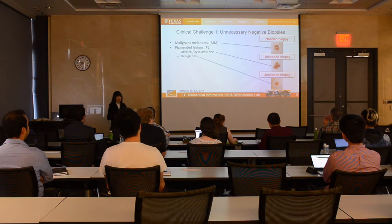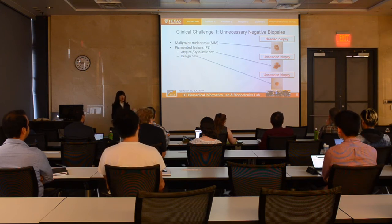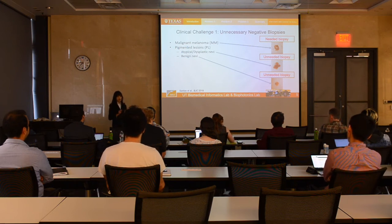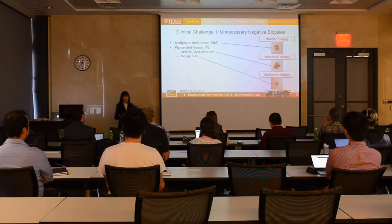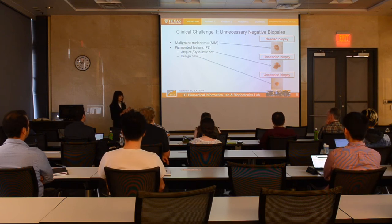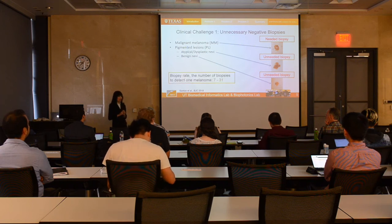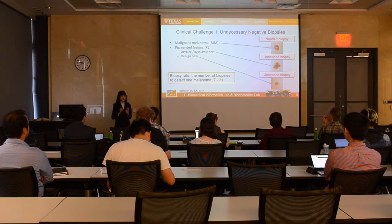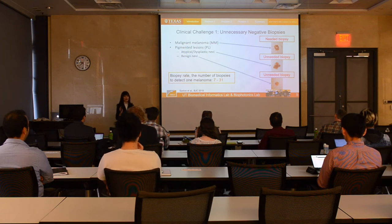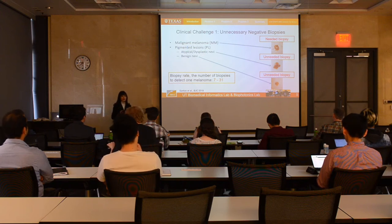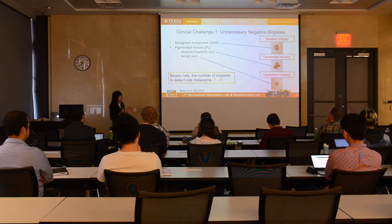This slide shows some examples of pigmented lesions that are frequently biopsied. Melanoma has to be biopsied because it's cancer. But for non-malignant pigmented lesions, such as atypical, dysplastic, or benign lesions, they do not need to be removed. The biopsy rate evaluates the number of unneeded biopsies — specifically, the number of biopsies to detect one melanoma — and this was reported to be from 7 to 31. Ideally, we only want one biopsy per melanoma, so 7 to 31 means there are many unneeded biopsies on benign lesions, and we want to reduce this number.